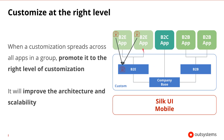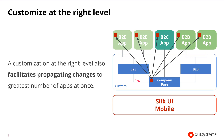When a customization spreads across all the apps in a group, we can promote it to the right level of customization. By promoting it to a higher level, it improves the architecture and scalability because there's only one place to change the customization, but it affects all instances. Another advantage of having customizations at the right level is that any changes to a customization will propagate to all of the correct apps at once. For example, a change made to a company base customization will propagate to all apps that use it, so it becomes faster and easier to change apps.